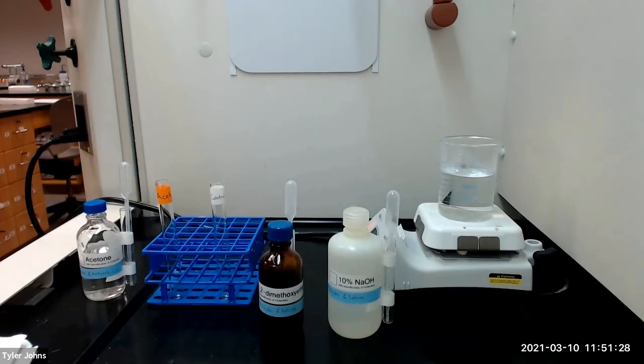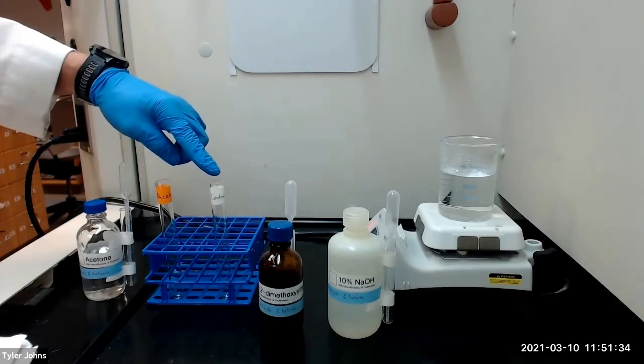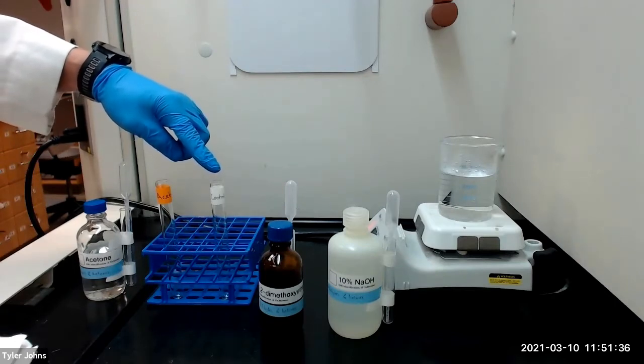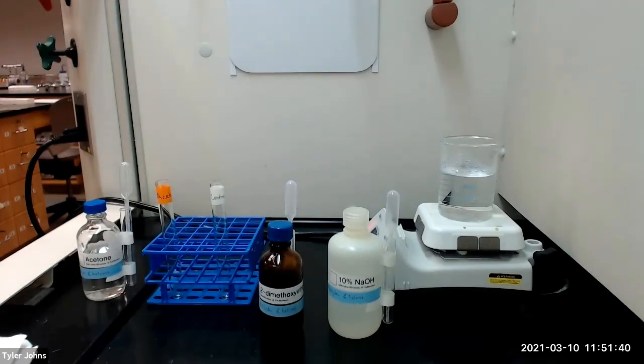We will now perform the iodoform test using acetone as our test compound, and for reference we will be using a negative control that will contain all of the reagents except for the acetone. The iodoform test allows us to determine the presence of a methyl ketone or a compound that is easily oxidized to a methyl ketone. Other ketones will also decolorize the iodine solution but they will not give a precipitate of iodoform.